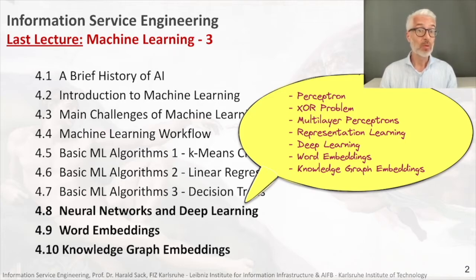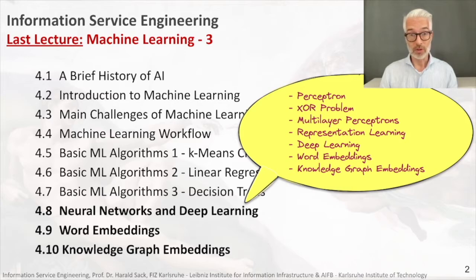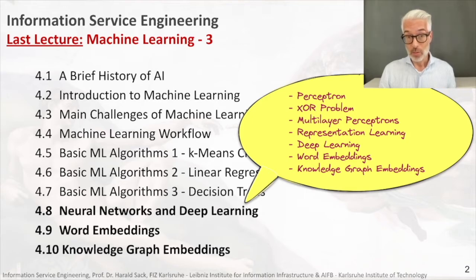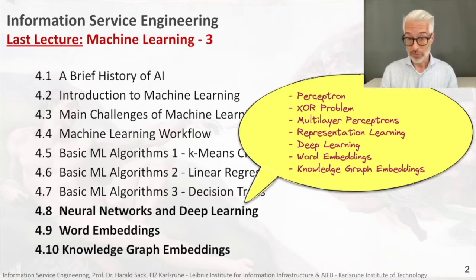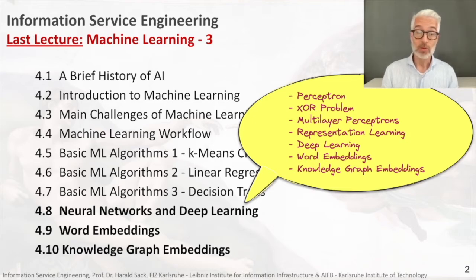In the last lecture we were dealing with neural networks and deep learning. We learned about the perceptron, the most basic form of a neural network, consisting of only one layer of simple neurons. With the perceptron we learned that it has its limits — the things you can classify with it have to be linearly separable. A simple XOR function, which isn't linearly separable, cannot be computed with a perceptron.